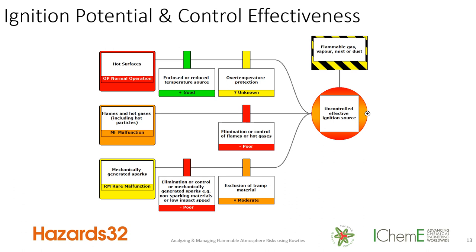The advantage of bowties and the barrier thinking associated with them is that you can show much more information. You can show the likelihood or potential for each type of ignition source — whether it may only occur rarely when you have an equipment malfunction, or may be common as part of normal operation. You also show the effectiveness or performance of the control measures or prevention barriers — whether they are good, very good, or poor — based on your evidence, maintenance records, audits, and records, to give a sense of the robustness of your protection portfolio.